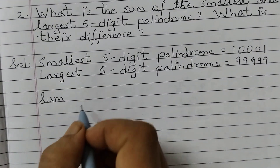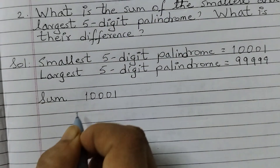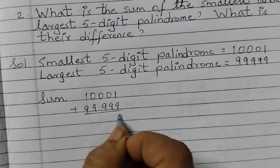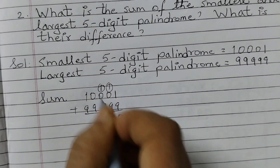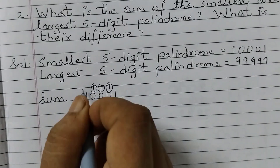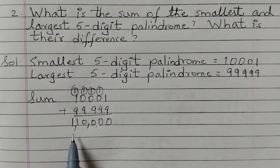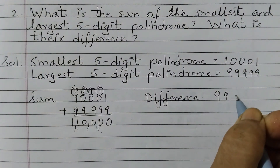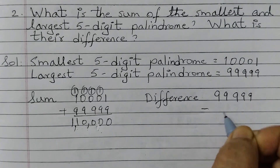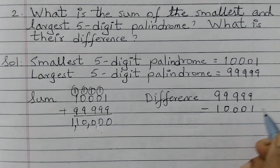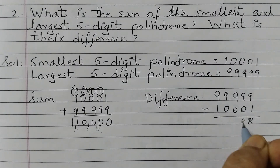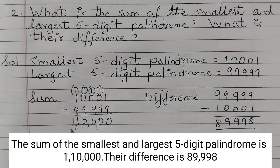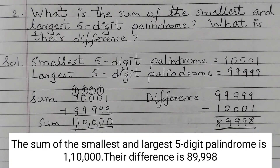Now we will find the sum, so 10,001 plus 99,999. Adding gives us carry-overs all the way through, and the sum is 1,10,000. For the difference, we write the bigger number first: 99,999 minus 10,001. 9 minus 1 is 8, and we get 89,998. So the sum is 1,10,000 and the difference is 89,998.